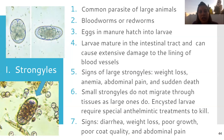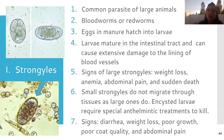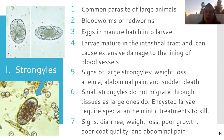Strongyles are really common in large animals, especially horses. They still follow that same life cycle — eggs go out in the feces, hatch into larvae, get re-ingested. The larvae mature in the intestinal tract and can end up causing damage to the blood vessels because they can migrate to other places and encyst, just like other parasites we've talked about. It can be difficult to treat them because if they're not in the intestinal tract like they're supposed to be, deworming won't catch them.